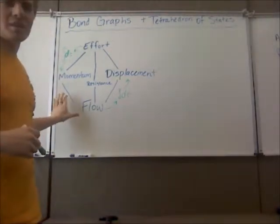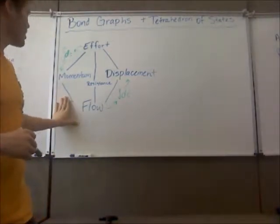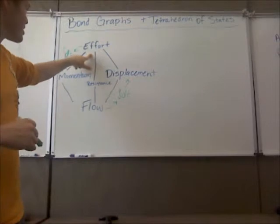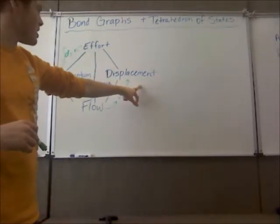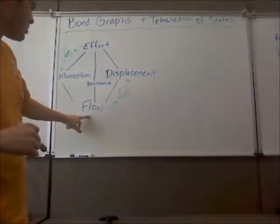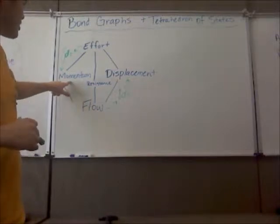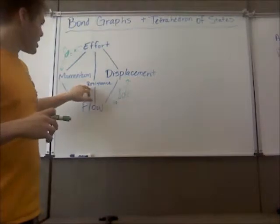So first of all I've drawn the tetrahedron of states right here. Up at the top you've got your effort. Going clockwise we've got displacement, at the bottom flow, and then on the nine o'clock we've got momentum. And in the center we've got resistance.